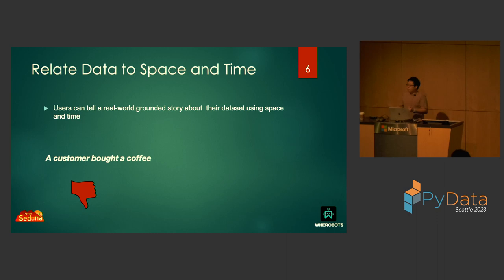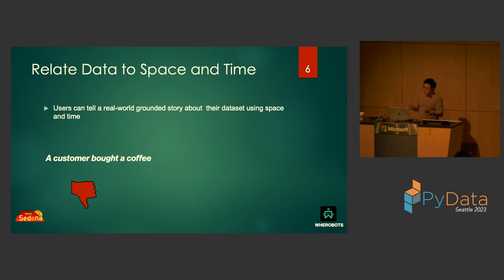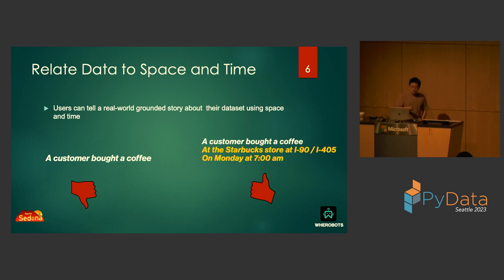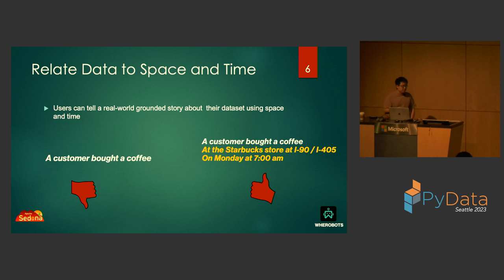If you want to make sense of your geospatial data, you first need to relate it to space and time. For example, suppose your database has a transaction saying a customer bought a coffee — that doesn't tell you much. But if you add space and time: a customer bought a coffee at the Starbucks at the intersection of I-90 and I-405 on Monday at 7am — this opens up a whole new world for spatial temporal analysis, hotspot analysis, and traffic analysis.